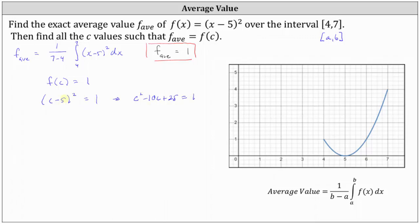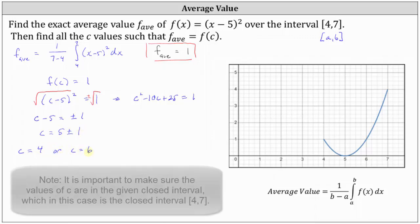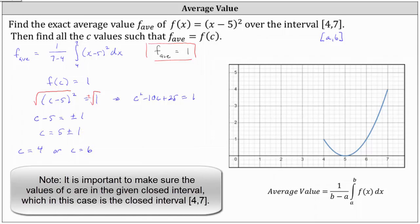Using square roots, we take the square root of both sides of the equation. To get both solutions, we include a plus or minus on the right. The square root of (c-5)² is one factor of c minus five, and plus or minus the square root of one simplifies to plus or minus one. Adding five to both sides gives us c equals five plus or minus one, meaning c equals four or c equals six.